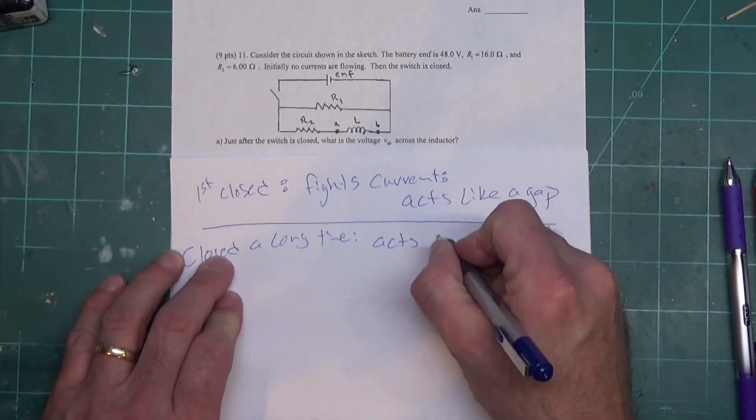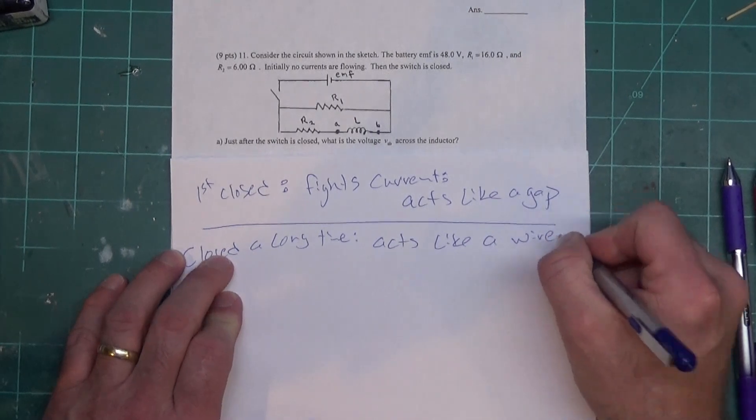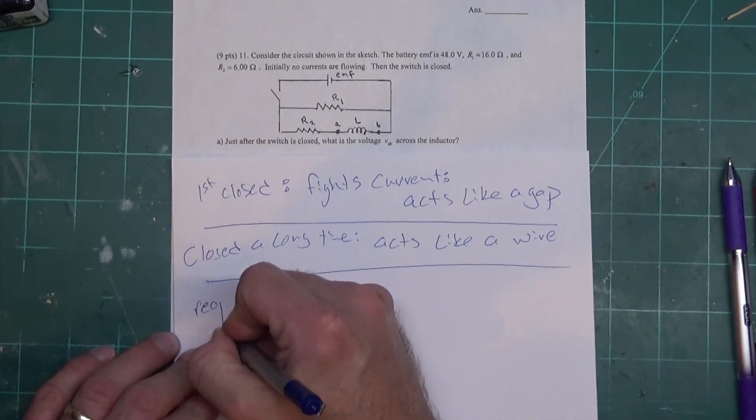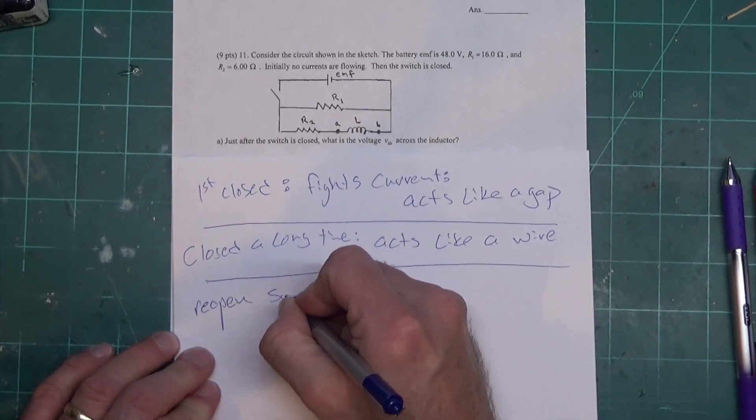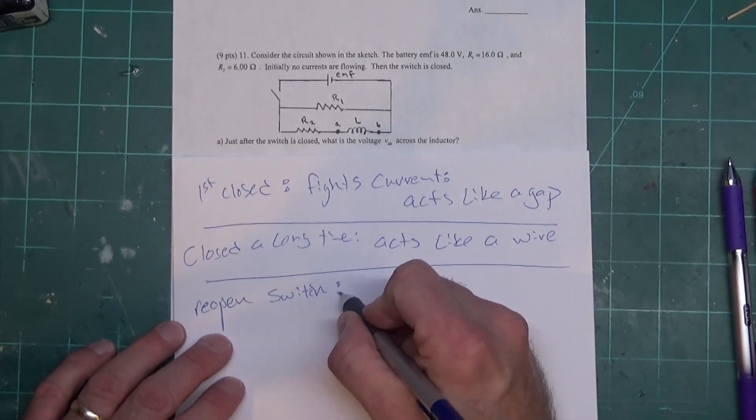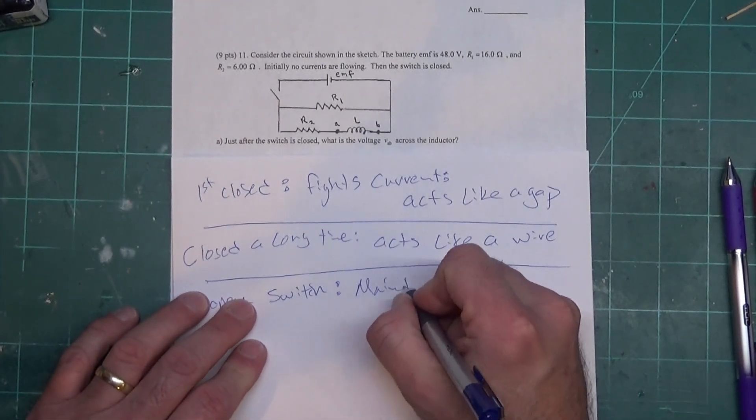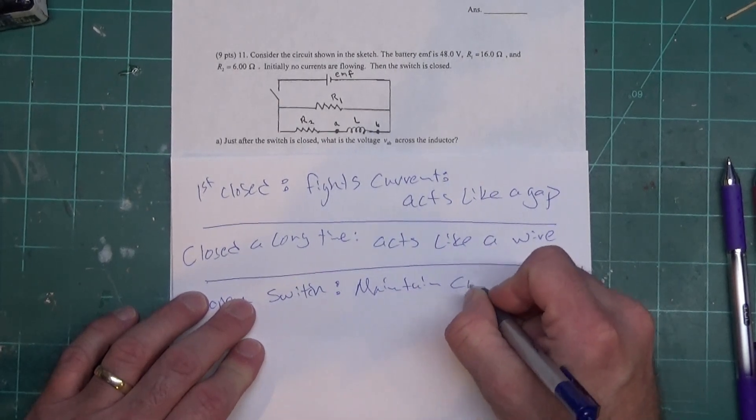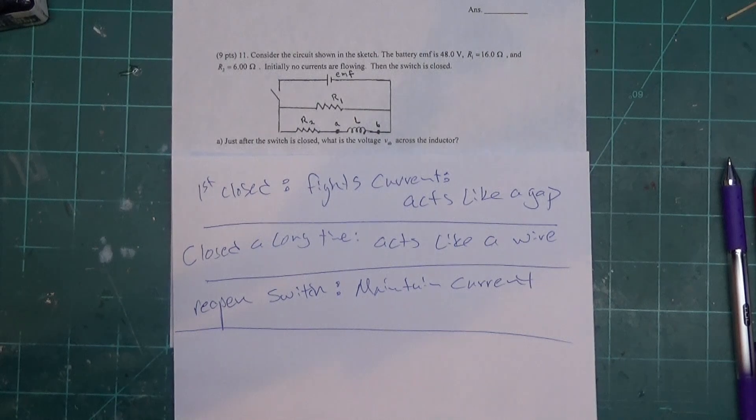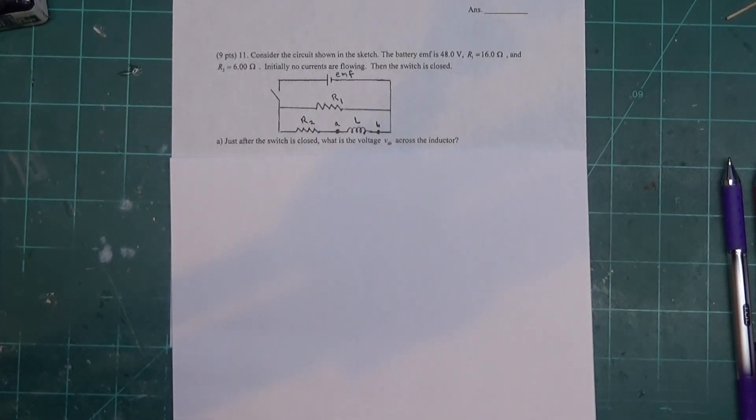If I reopen the switch, it's going to fight the current dropping off and it's going to try to maintain current. So there's a quick run through of what happens when we open and close the switches.